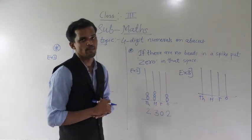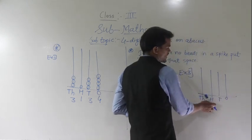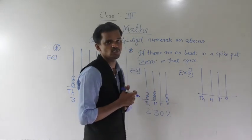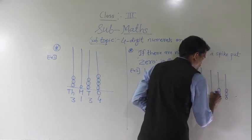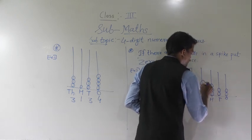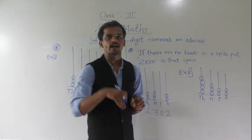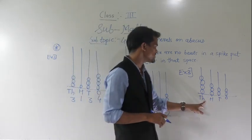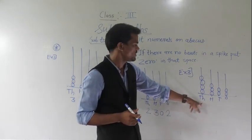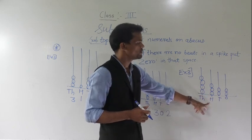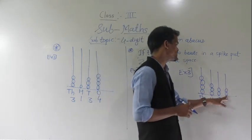This abacus has four spikes — ones, tens, hundreds, and thousands place. Now I am putting some beads. You try to read this number and write it in your notebook. At the thousands place: one, two, three, four — four thousand. At hundreds place: one, two, three beads — three hundred. At tens place: two beads — twenty. At ones place: two beads — two.